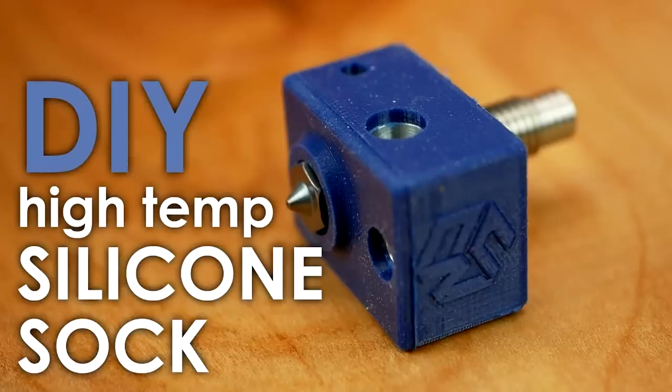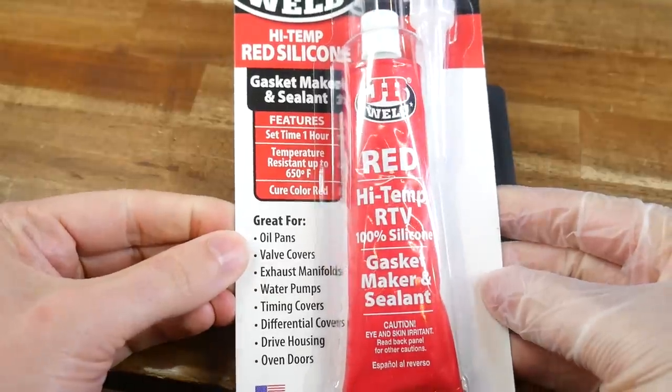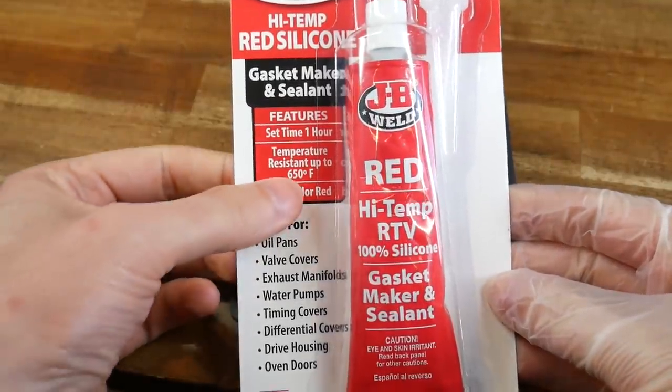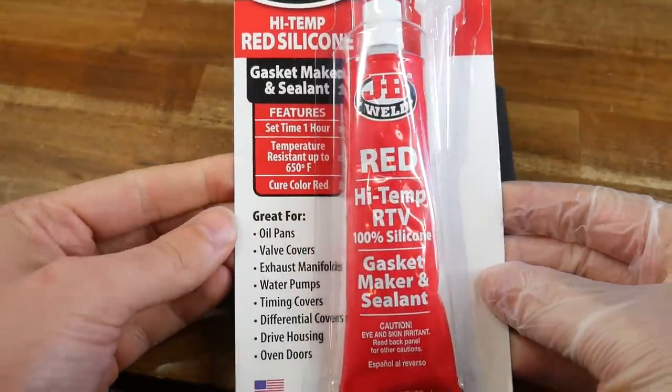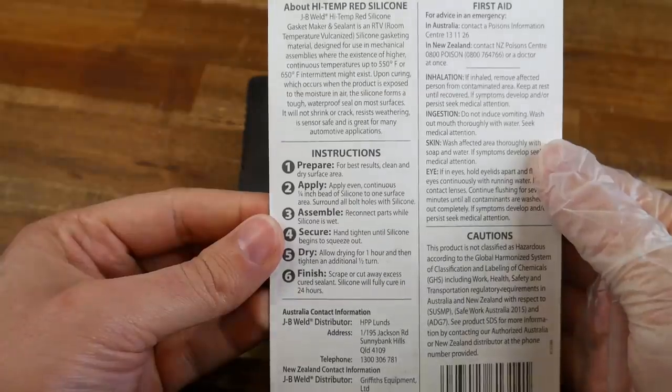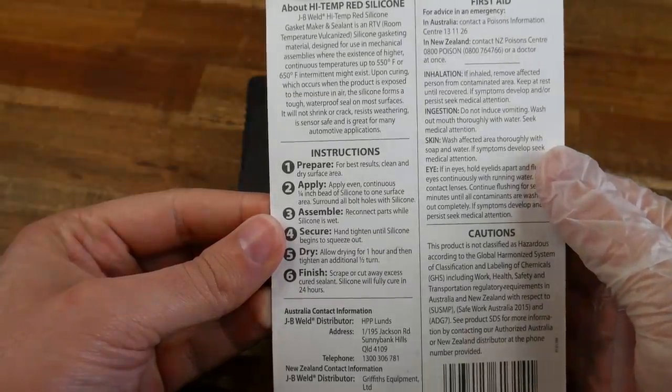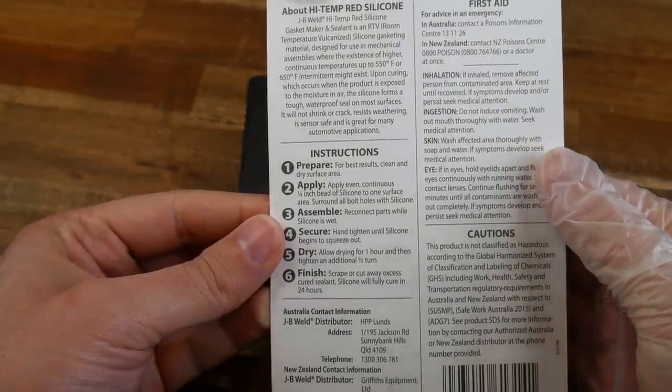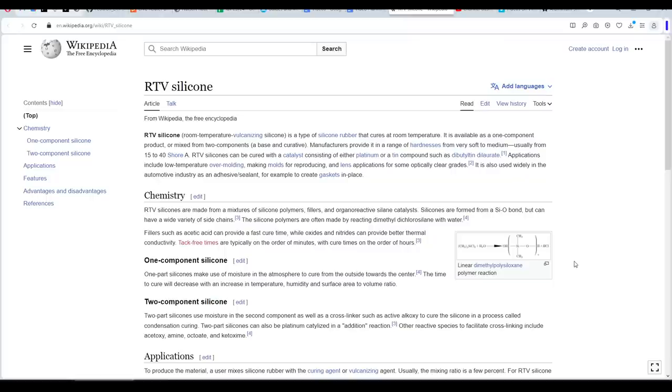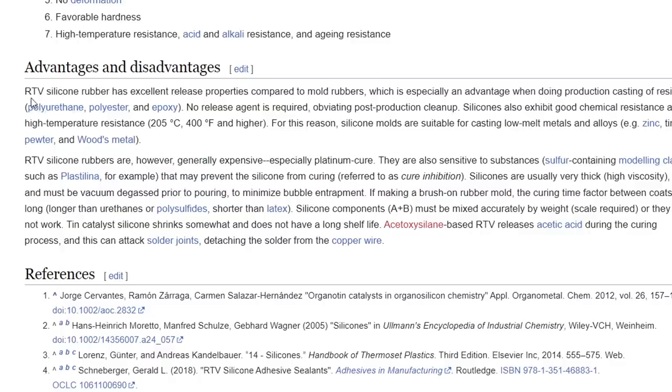So I watched this video from CNC Kitchen to get some pointers. Rather than use a two-part silicone like he did, I instead used this RTV silicone for automotive use that was rated up to 650 degrees Fahrenheit or around 340 degrees Celsius. RTV stands for Room Temperature Vulcanizing. In short, that means the silicone will set by itself without any special tools or conditions. Another advantage is that RTV is meant to have excellent release properties, meaning I shouldn't need a release agent. I can just 3D print a mold and cast the silicone washers I want directly inside it.